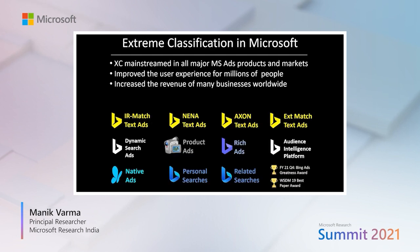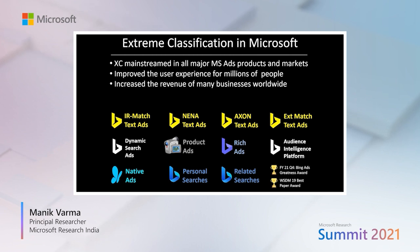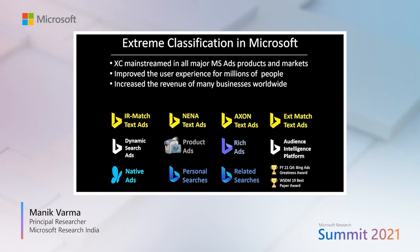This can be an incredibly powerful idea as it can lead to very significant gains in key performance indicators including user experience metrics, click-through rates, coverage, diversity, advertiser satisfaction, revenue, etc. As a result, our extreme classifiers have been tech-transferred into virtually every major product and market on the Microsoft advertising platform, where they are making billions of predictions a day, helping hundreds of millions of people, and generating revenue for many small and medium enterprises around the world and helping them find new customers, which is very important during the pandemic.